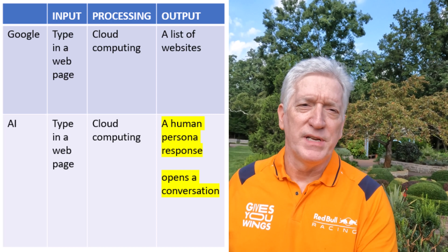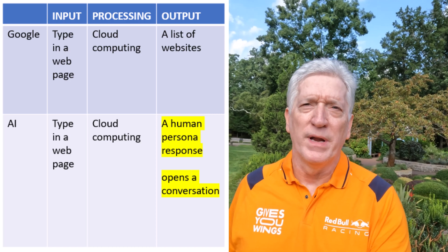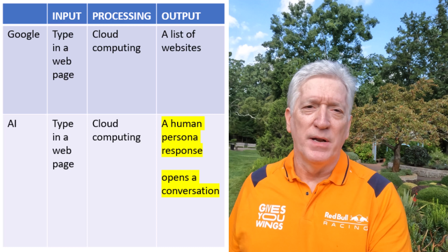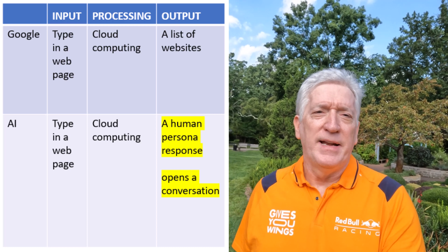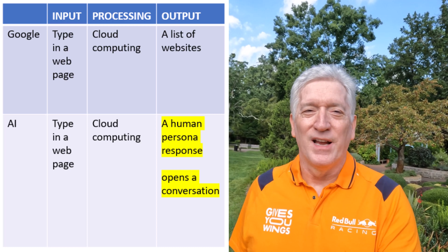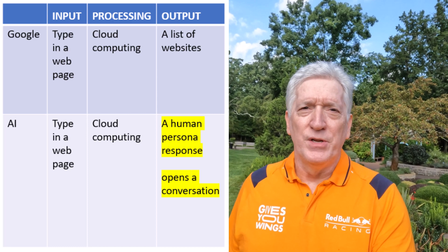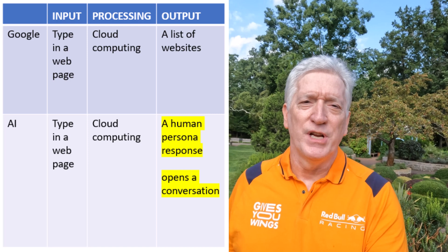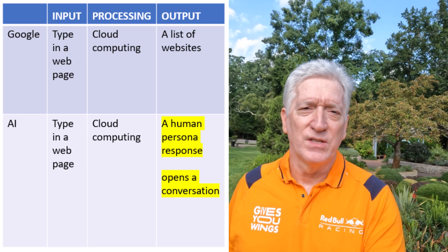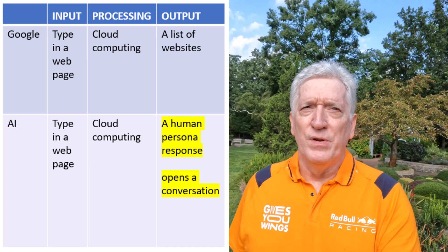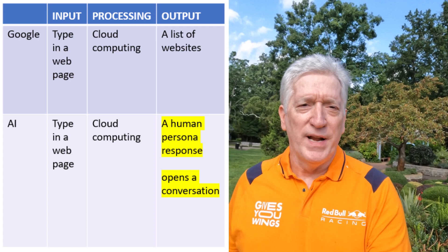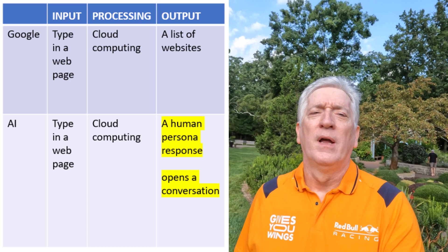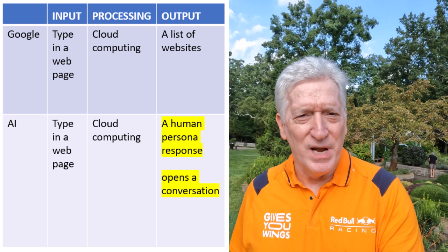AI talks to you like a human being would — it's conversational. It can adopt a personality type: formal, informal, or casual. You can set those settings and ask it to respond in different ways or as different characters. The way I see it, Google is a massive search engine that produces a bunch of web pages where you then have to go through each one looking for the relevant results.